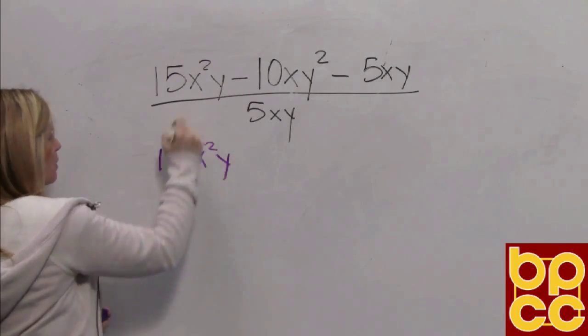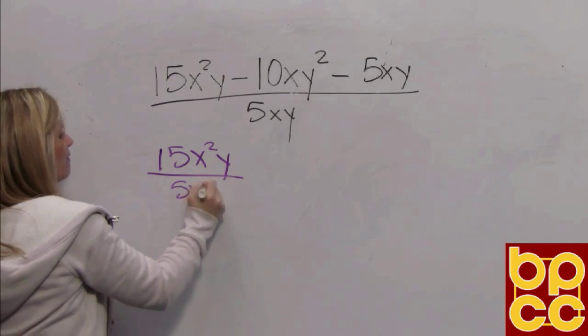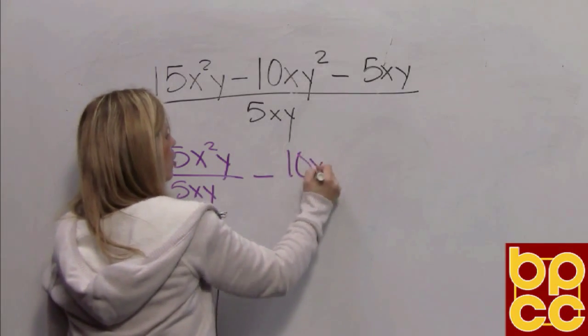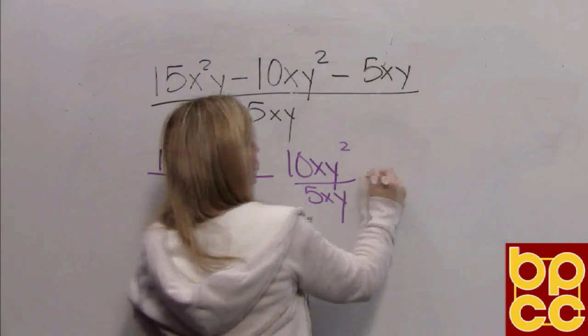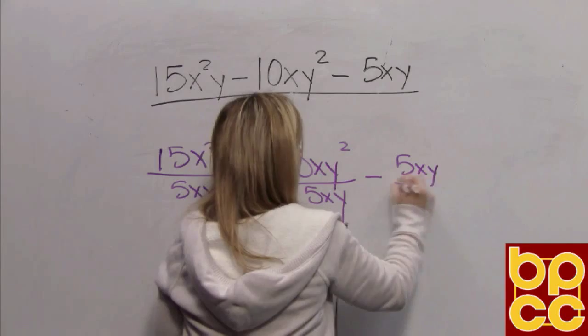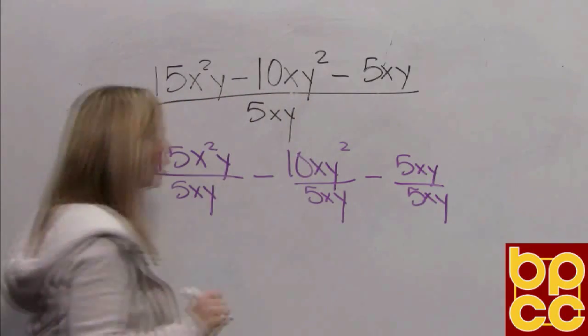So take your first monomial divided by 5xy. Take your second monomial divided by 5xy. Take your third monomial divided by 5xy.